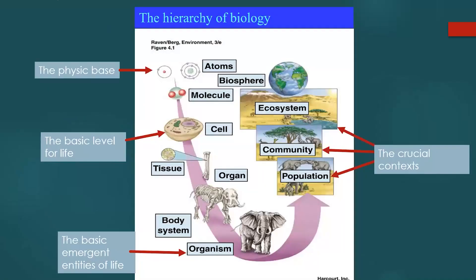Here's a basic hierarchy. The physical basis is atoms, then you get molecules, then the basic level of life — cells — which is the first level where living reproduction takes place. Then these make up tissues, organs, and body systems, giving you the organism, which is the basic autonomous emergent entity of life. These comprise populations, communities, and ecosystems, which each act downward to give context for the development of organisms, because organisms don't exist on their own.